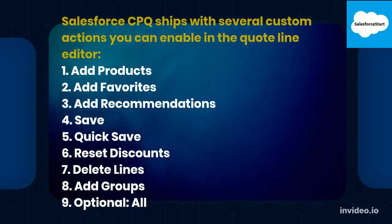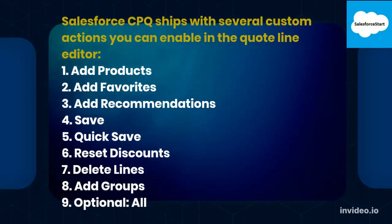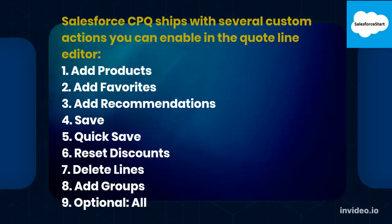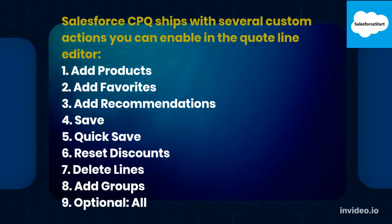Salesforce CPQ ships with several custom actions you can enable in the Quote Line Editor: 1. Add Products, 2. Add Favorites, 3. Add Recommendations, 4. Save, 5. Quick Save, 6. Reset Discounts, 7. Delete Lines, 8. Add Groups, 9. Optional, All.